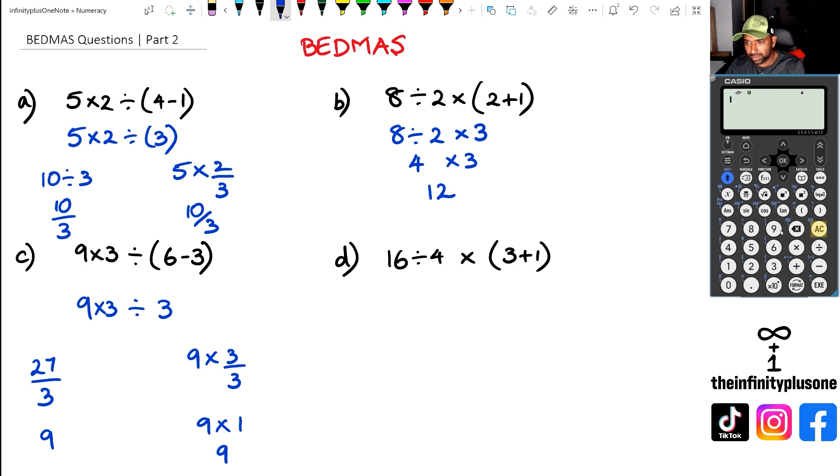Let's put that in the calculator to see what we get. So I've got 9 times 3 divided by 6 minus 3, we've got 9. And going to question D.